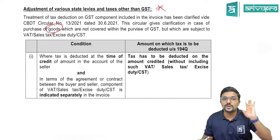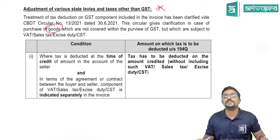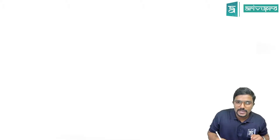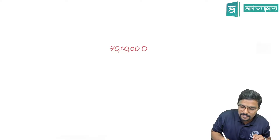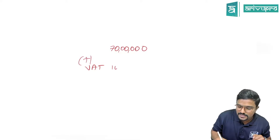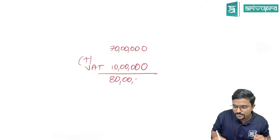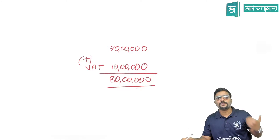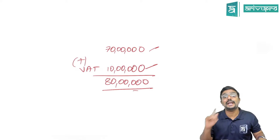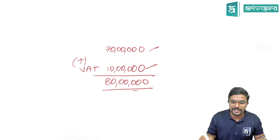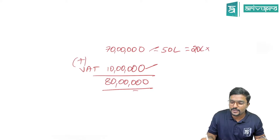For example: assume there is a sale of alcoholic liquor for human consumption for 70 lakh, plus VAT of 10 lakh indicated separately in the invoice, so the buyer is paying 80 lakh total. On what amount does he deduct TDS? Only on 20 lakh — that is 70 lakh minus the 50 lakh threshold limit — multiplied by 0.1%. The TDS should not be deducted on the tax component. This is similar to the GST clarification, now extended to goods where GST is not applicable.